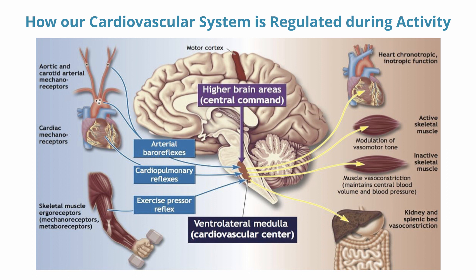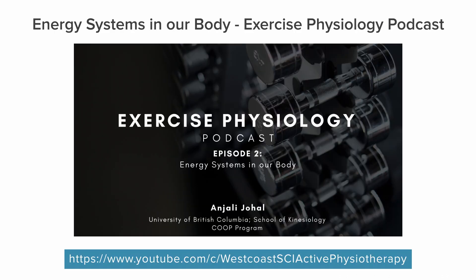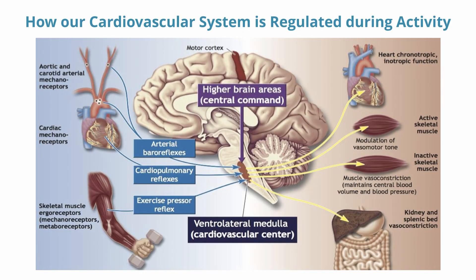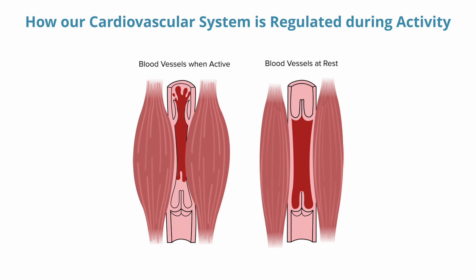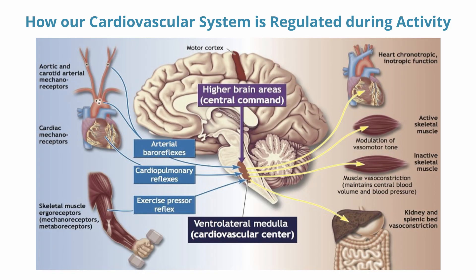These skeletal muscle receptors are sensitive to metabolites like increased lactate accumulation, and they trigger more blood flow to be sent to the working muscles. Together, these signals are integrated and have a cumulative effect on how blood is transported and where it goes, as well as controlling how fast our heart is contracting. Additionally, receptors sense muscle vasoconstriction during exercise — vasoconstriction being the narrowing of blood vessels that increases blood pressure. Through muscle vasoconstriction, we can control the blood volume and pressure going to muscles that need more blood during exercise.